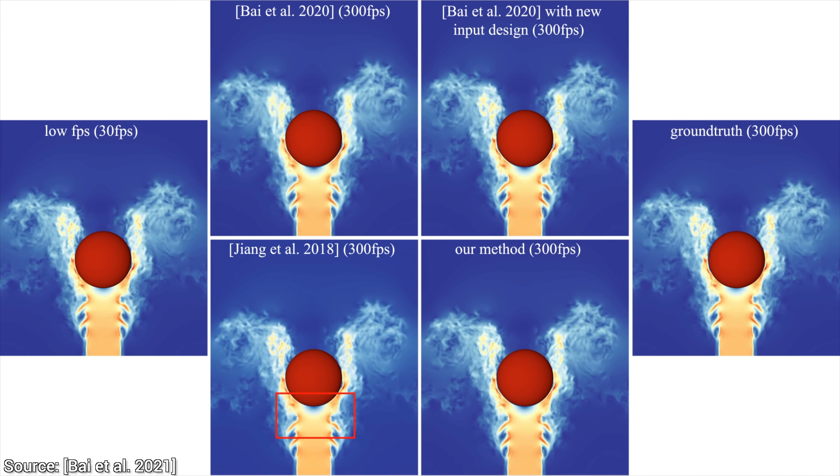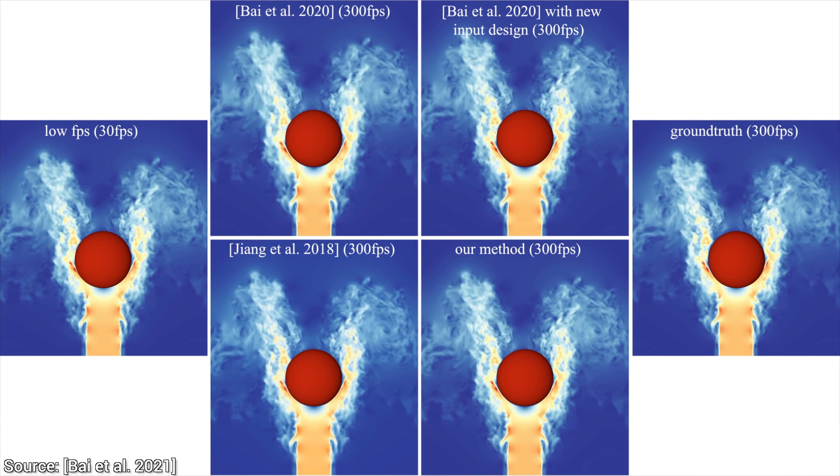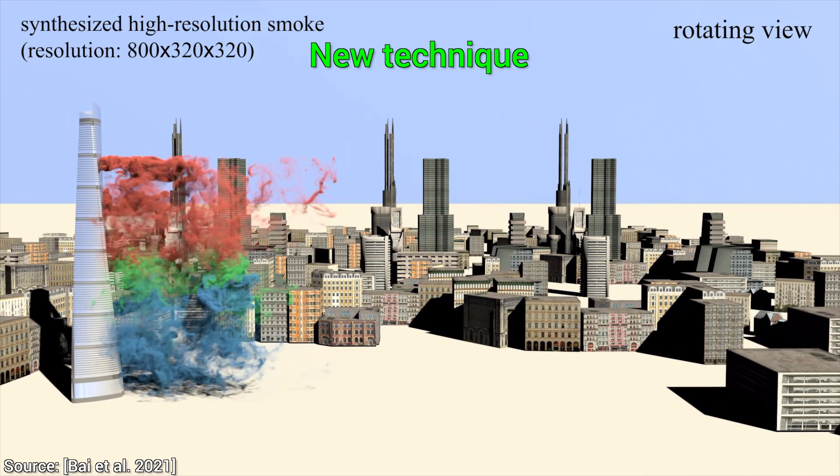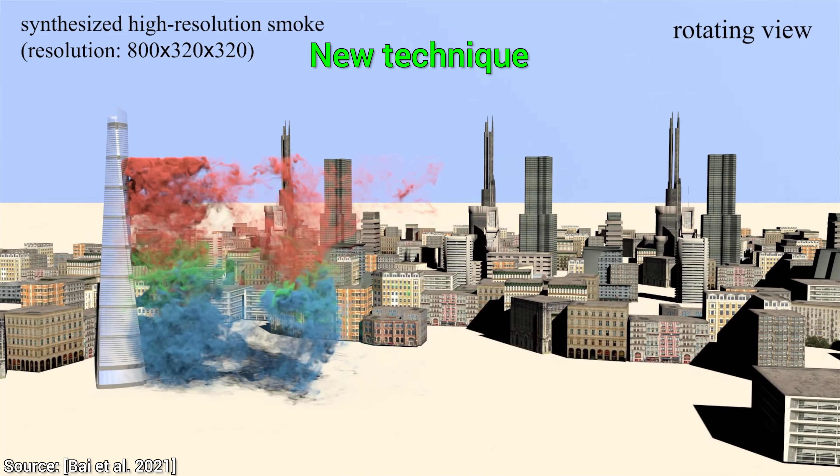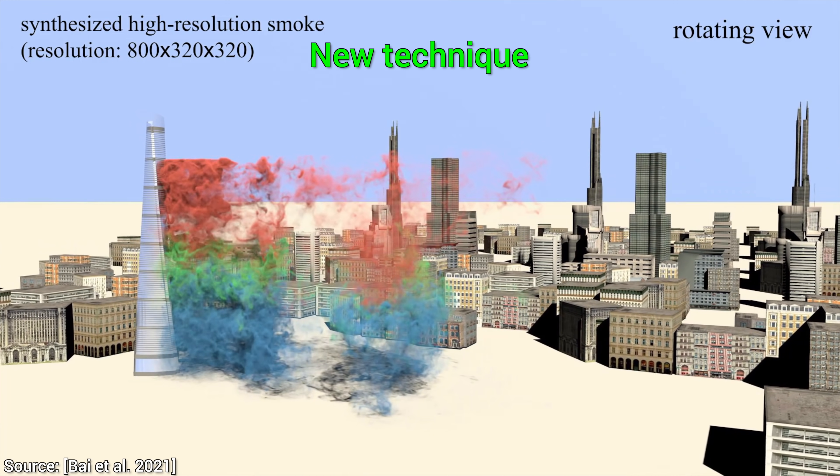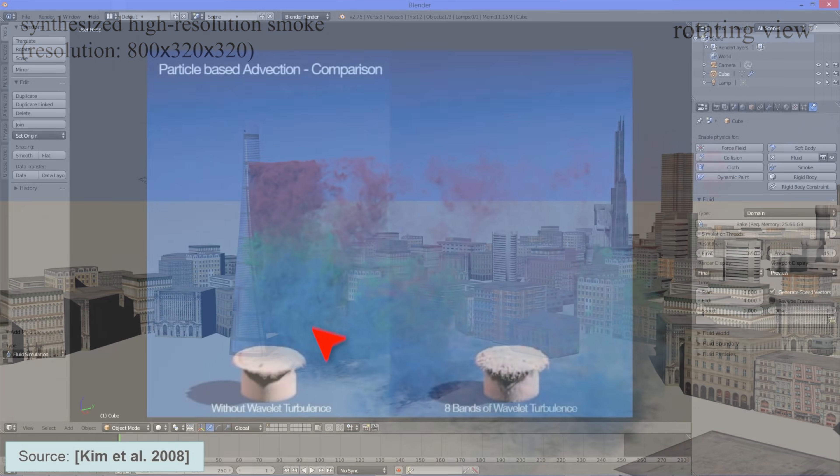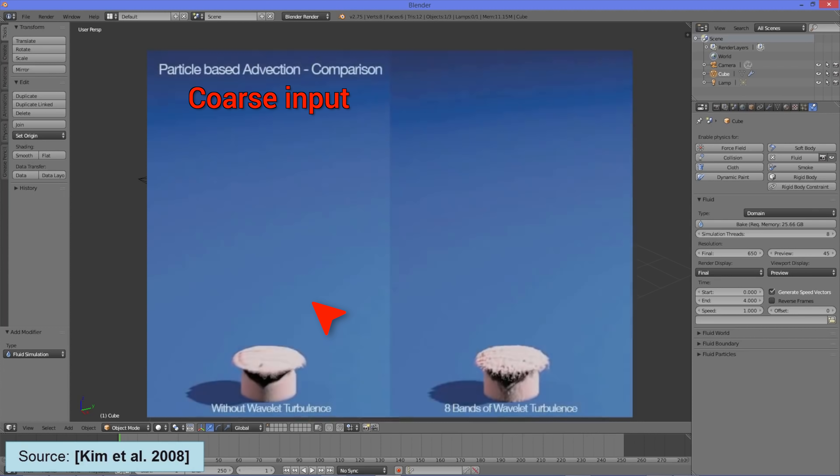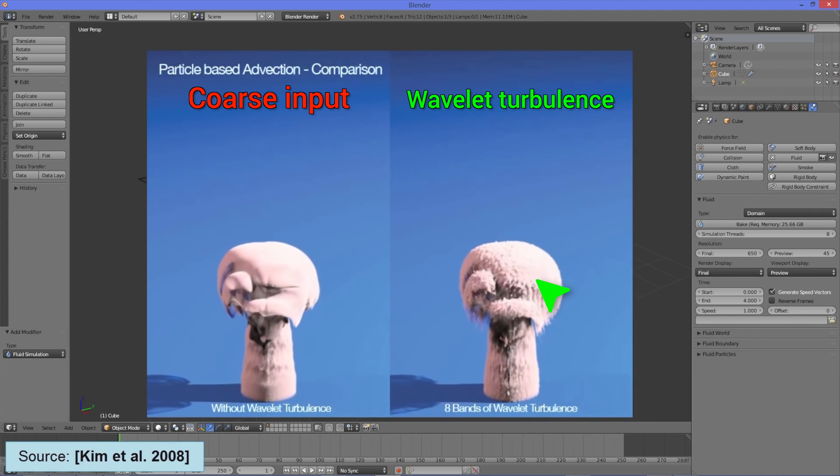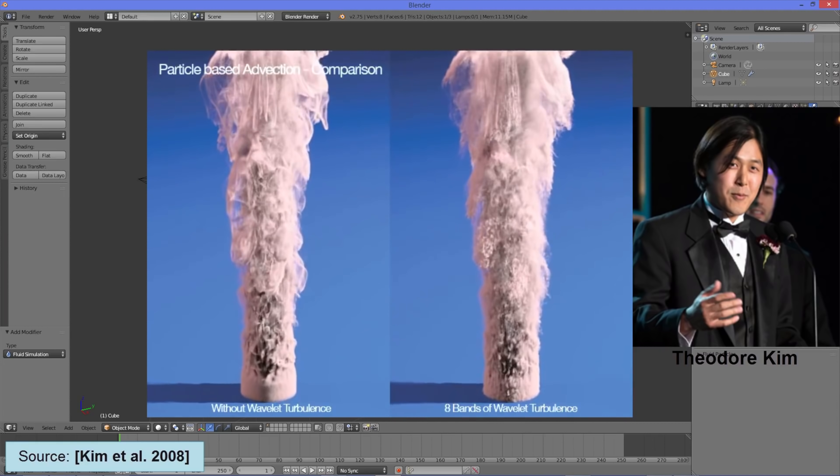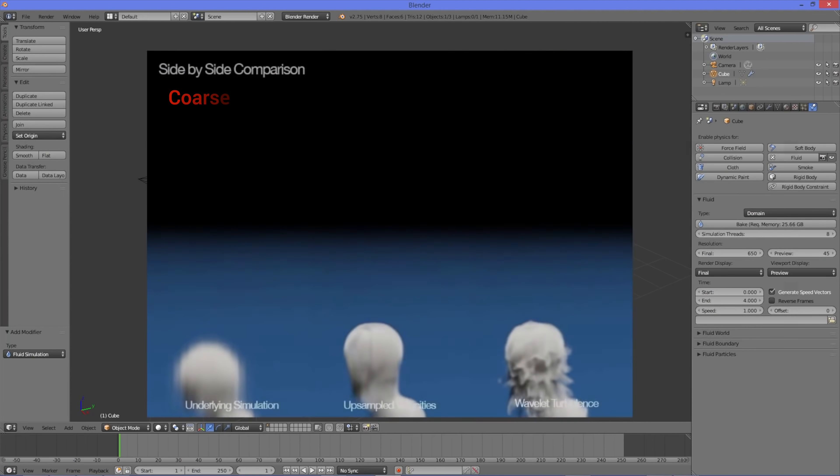To understand what this new paper has to offer, we have to look at an earlier work named Wavelet Turbulence. Apart from the fact that in my opinion it is one of the best papers ever written, it could do one thing extremely well. In goes a coarse, low-resolution smoke or fluid simulation, and out comes a proper simulation with a lot more details. And it is typically accurate enough to fool us. And all this was possible in 2008.